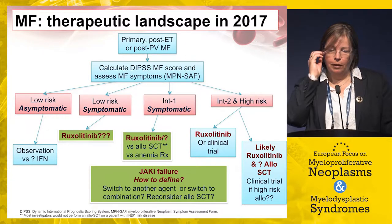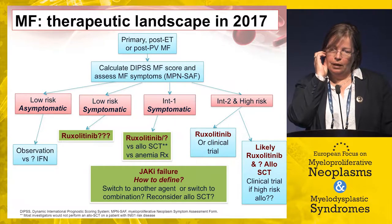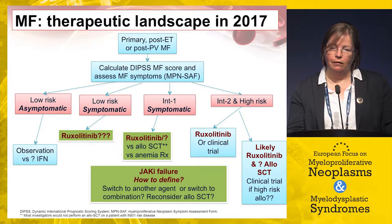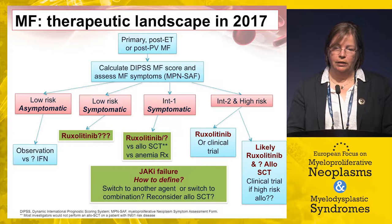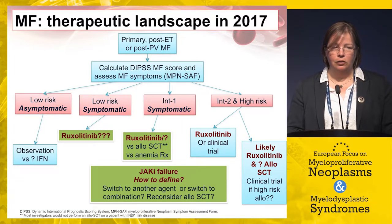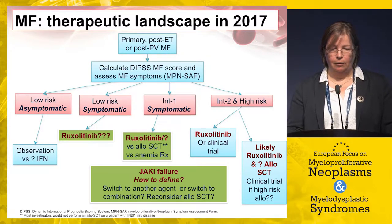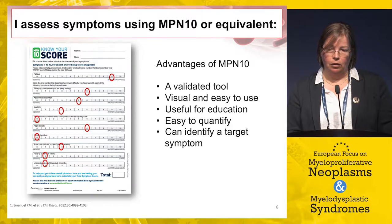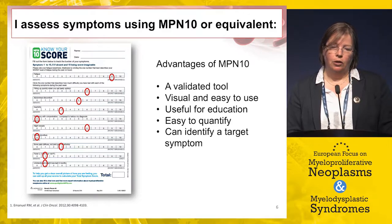The therapeutic landscape for myelofibrosis is more complicated now than in the past. My algorithm involves making a diagnosis, looking at the patient as a whole, thinking about comorbidities, doing disease education, calculating a prognostic score, assessing symptoms, and then thinking about different treatments. I tend to use a formal symptom assessment where possible.